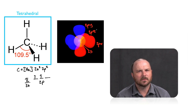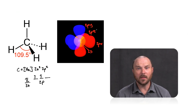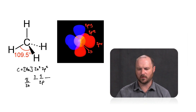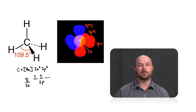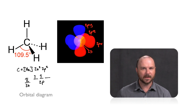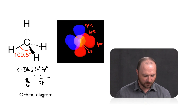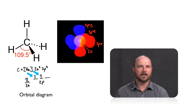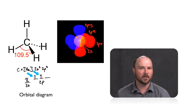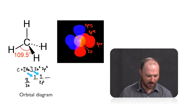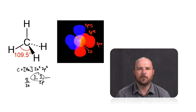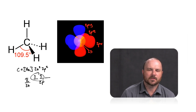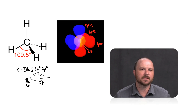Another weird thing happens when we look at how carbon is even able to have that many bonds. Remember, to have a covalent bond, each atom has to supply one electron into that bond. If we look at that orbital diagram of carbon, it looks like there are only two electrons that are in orbitals that are half full, able to donate into making a bond. So how do we get four bonds with that tetrahedral shape? Well, this is where hybridization comes in.